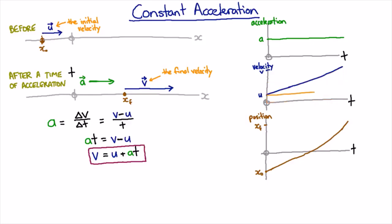Then it's the area of this rectangle plus the area of this triangle. The area of this rectangle—the height is u and the length is t—so that's just u times t.